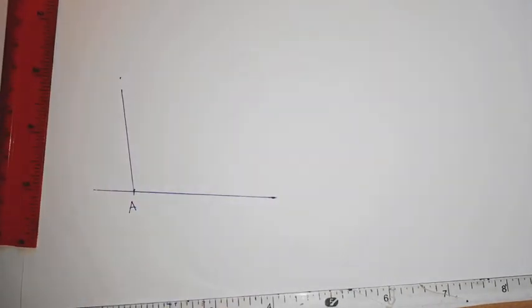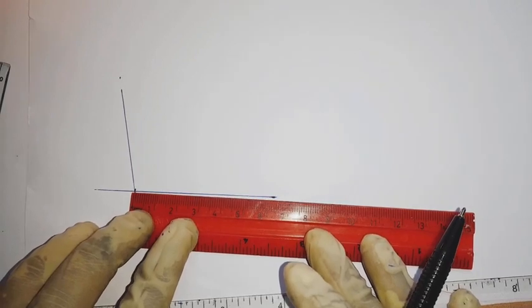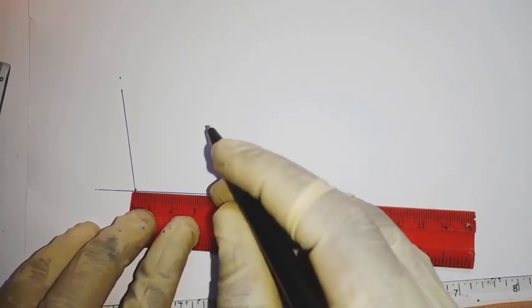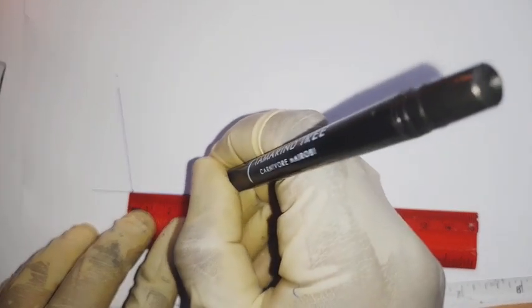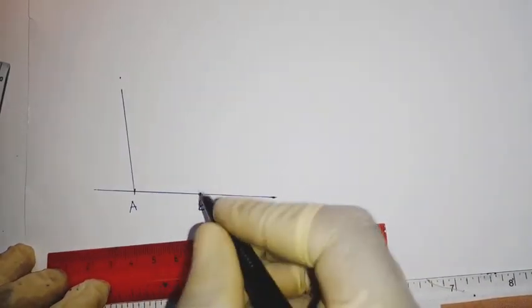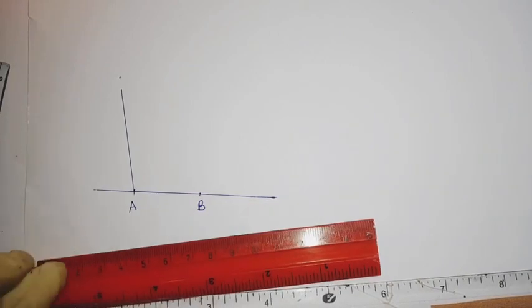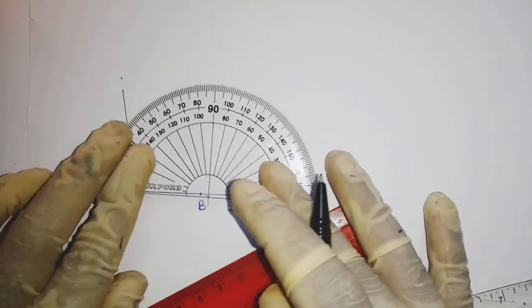Next we can have AB which is 30 millimeters, so you measure AB. This is B. Then we have angle B as 120.